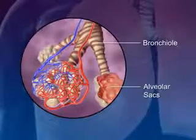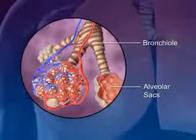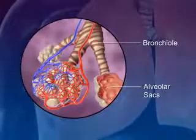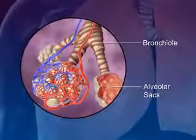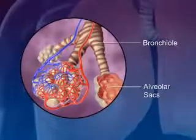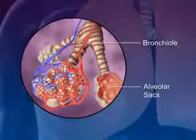At the end of each bronchiole are the alveolar sacs. The alveolar sacs are surrounded by blood capillaries and contain millions of single-layer alveoli cells, where gas exchange takes place.